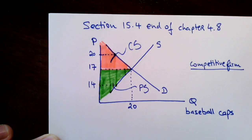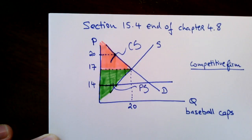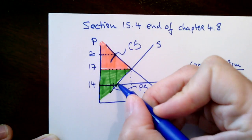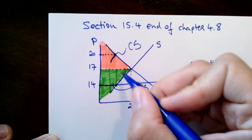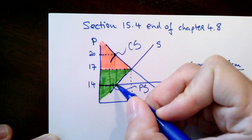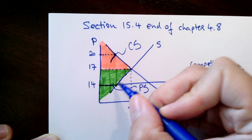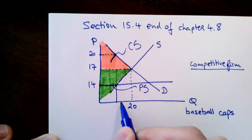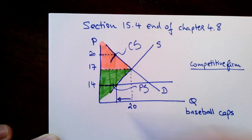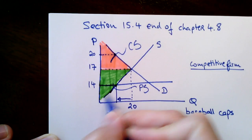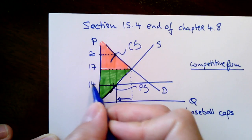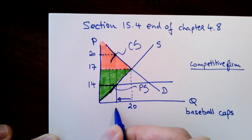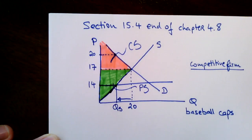Now let's imagine there's a rule saying you cannot charge more than $14 for the baseball cap. All of those firms that were willing to sell it for a lower price than $17 are now refusing to sell at $14. They were okay selling it for $15 or $16, but not $14. Therefore, you will have a drop in the quantity of baseball caps that firms are willing to sell at this lower price — only those firms on the supply curve willing to sell for that price or less. So only that many baseball hats will be sold.